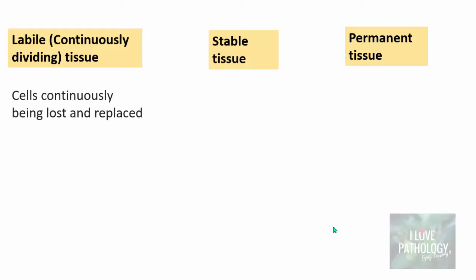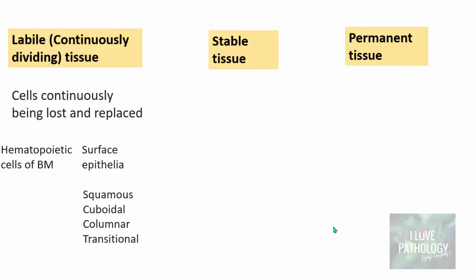Labile tissues contain cells which are continuously being lost and replaced. Examples include hematopoietic cells of the bone marrow and surface epithelia — squamous epithelium of the skin, cuboidal epithelium of glands, columnar epithelium in glands, and transitional epithelium of the urogenital system. These are the areas where cells are continuously being lost and replaced.